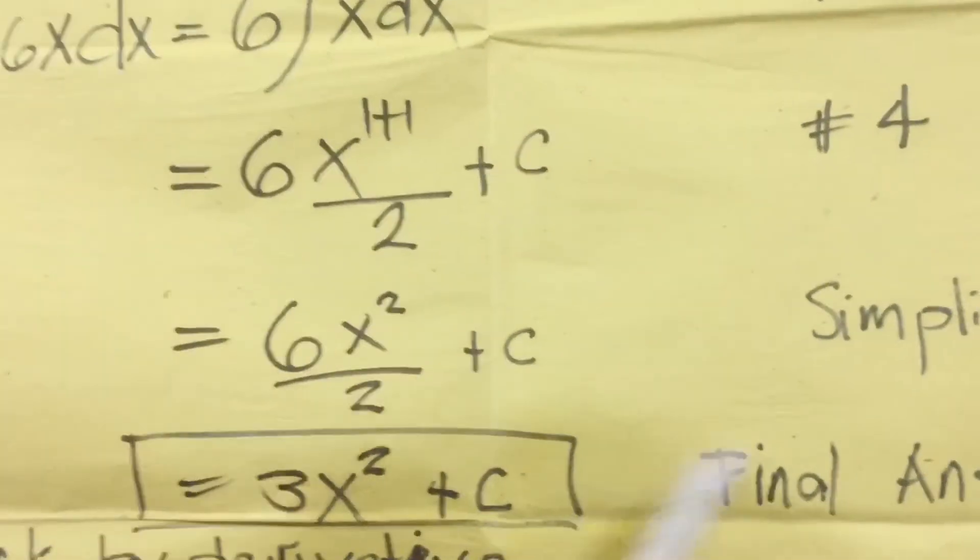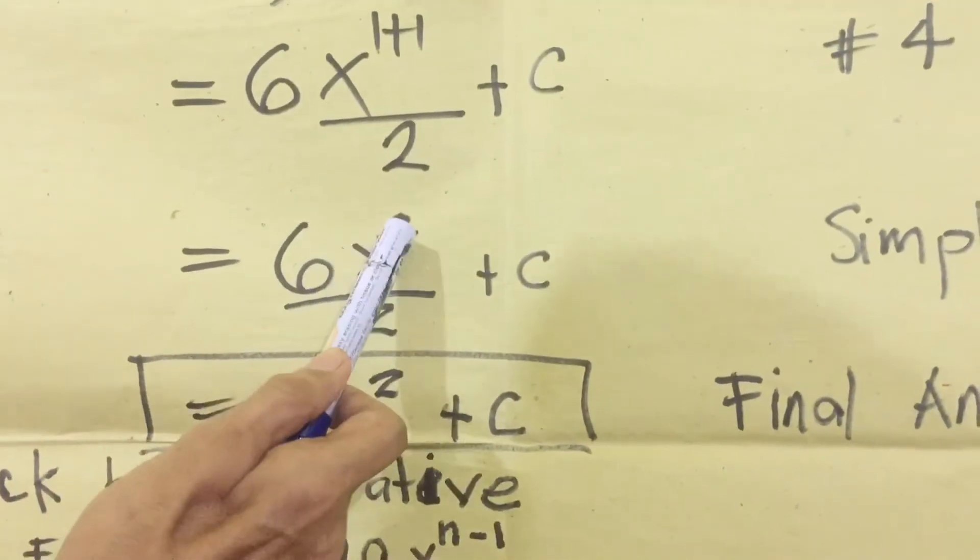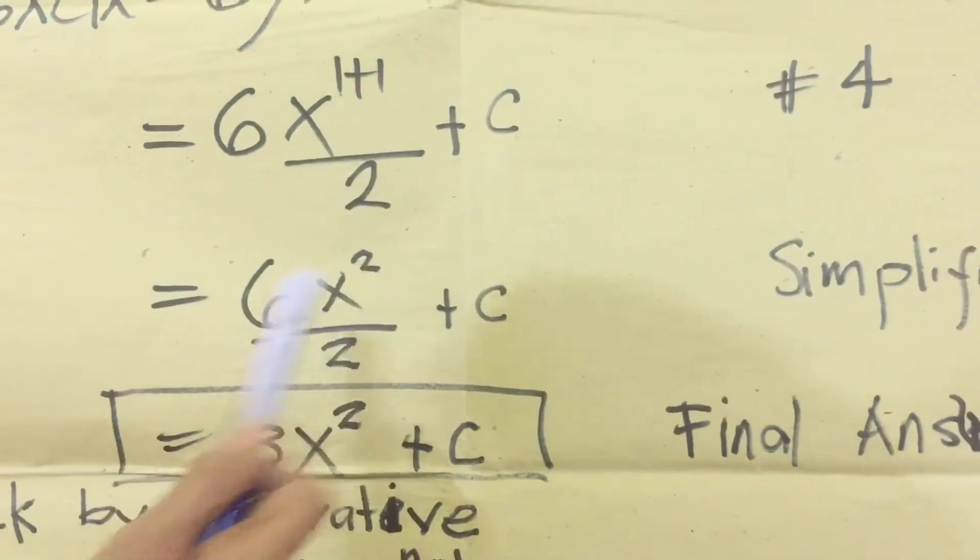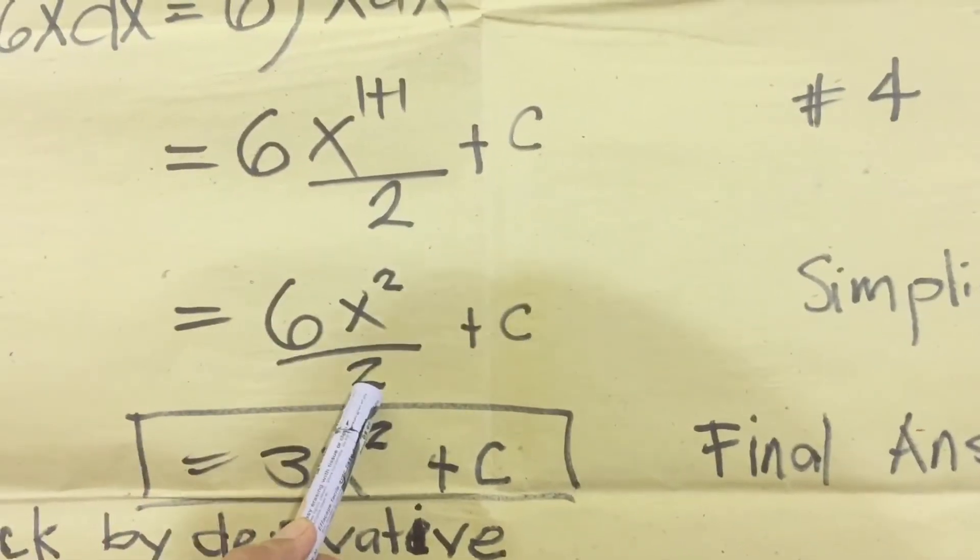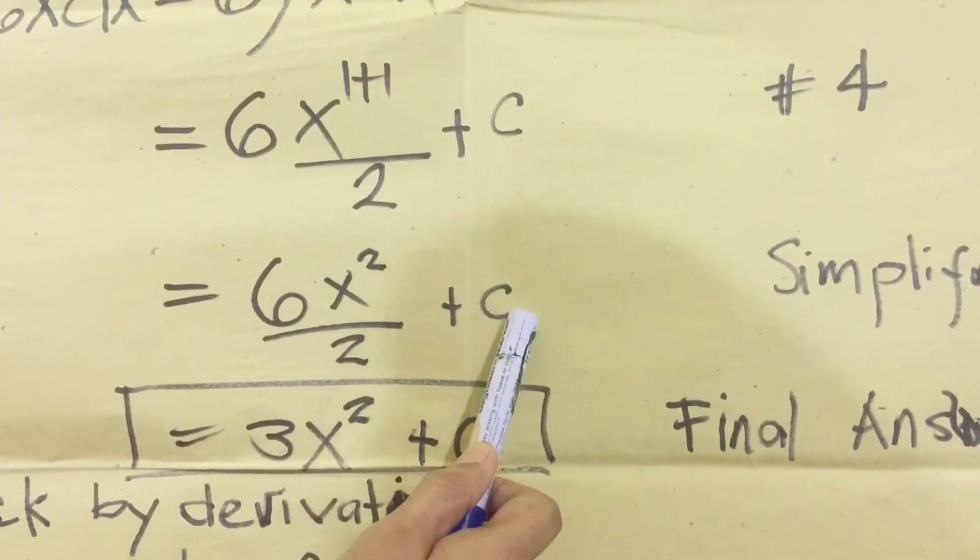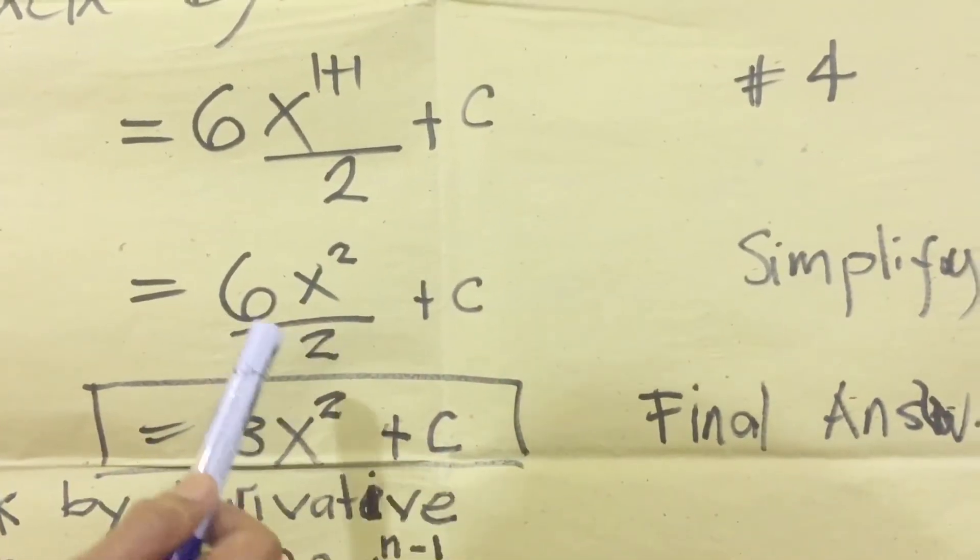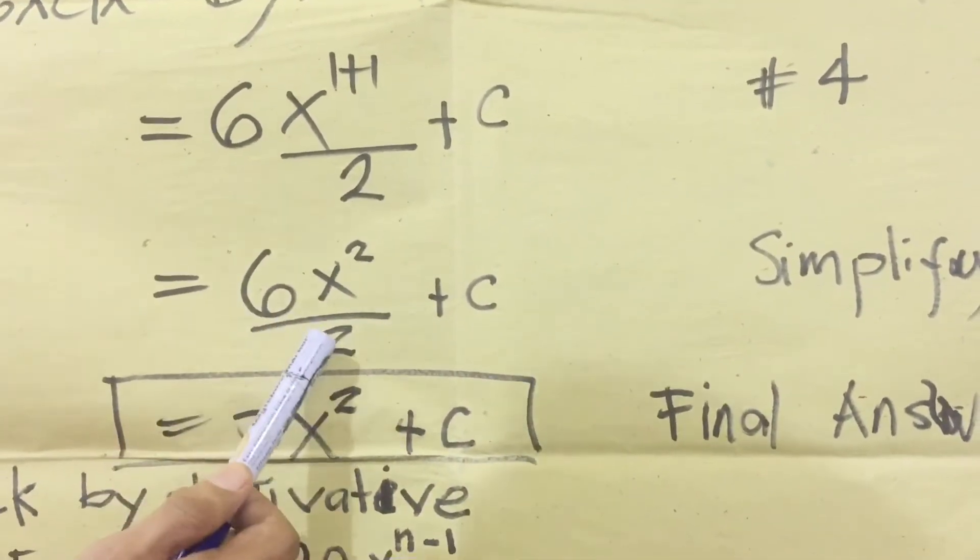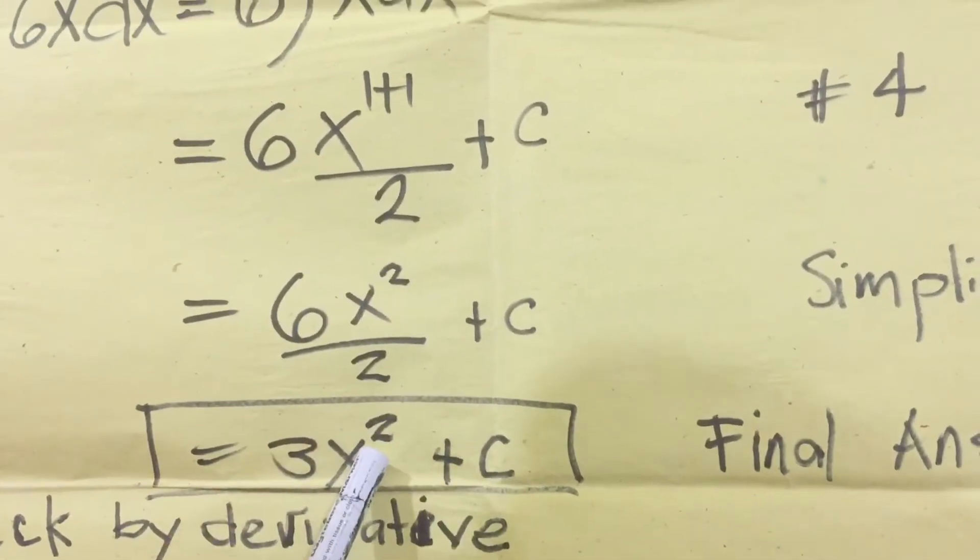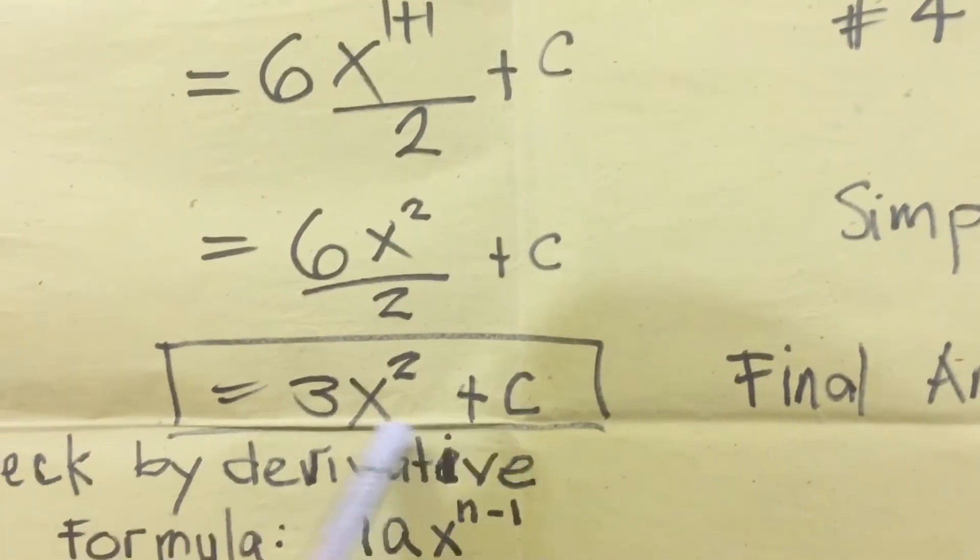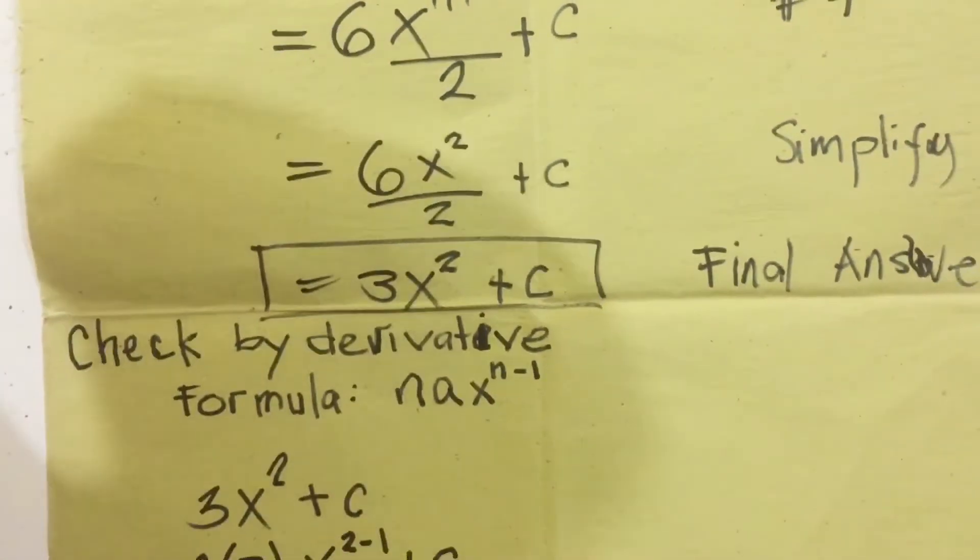DX equals plus c. Then simplify, it becomes six X squared, because one plus one equals two, then divided by two. Copy the denominator, plus c. Then simplify again, six divided by two equals three, copy X squared, plus c. This is our final answer.